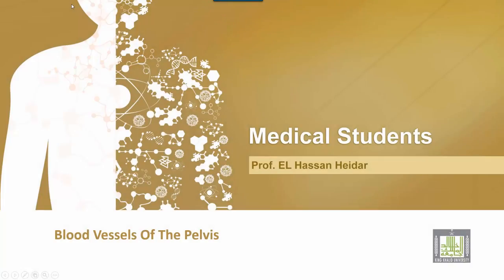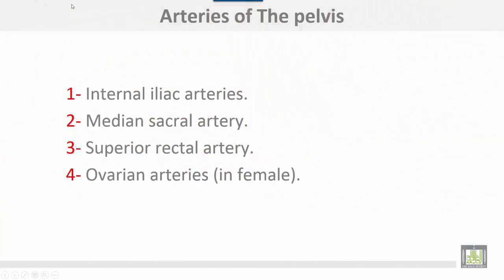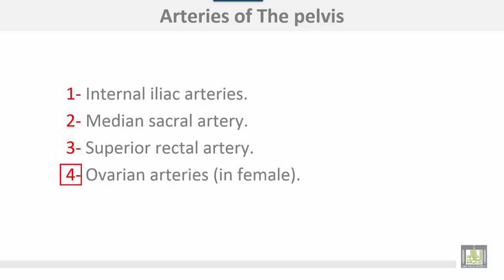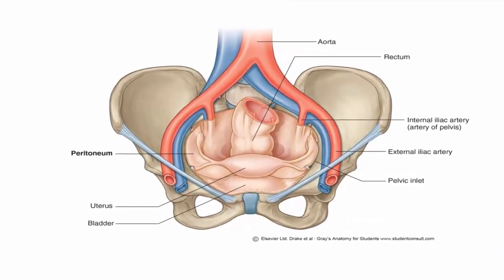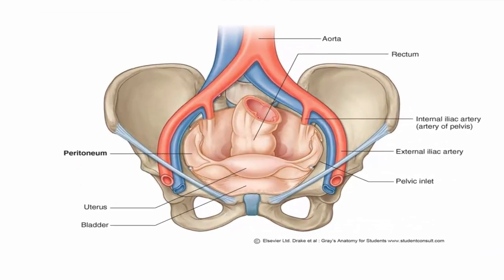Blood vessels of the pelvis. The arteries of the pelvis are: number one, internal iliac arteries; number two, median sacral artery; number three, superior rectal artery; and number four, ovarian arteries in females. These represent the blood supply entering the pelvis.